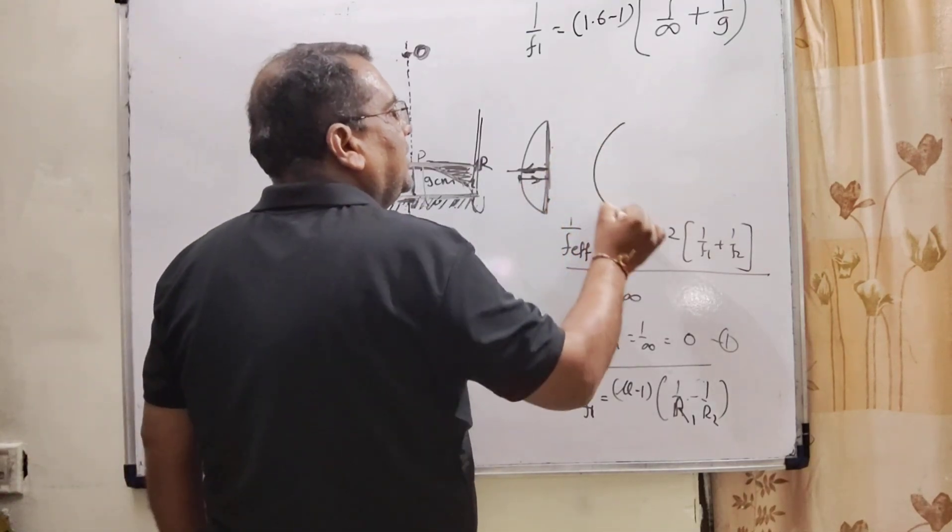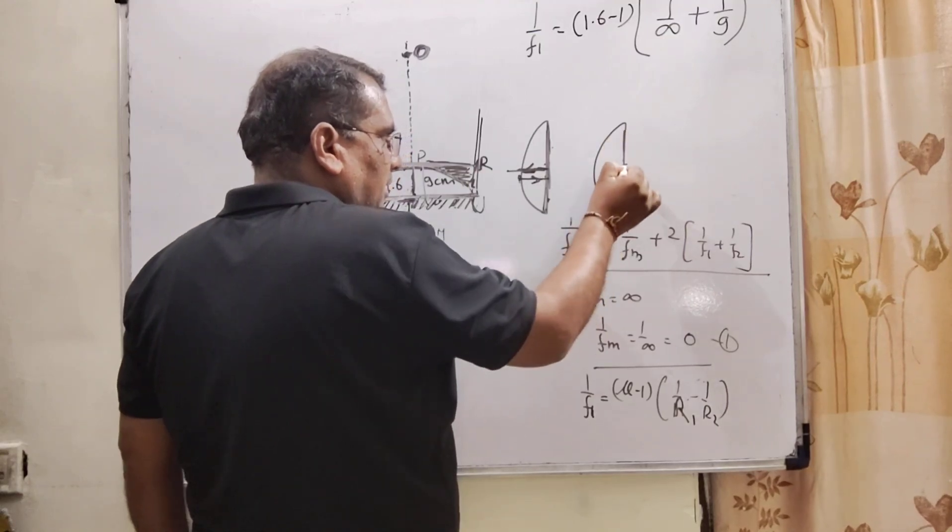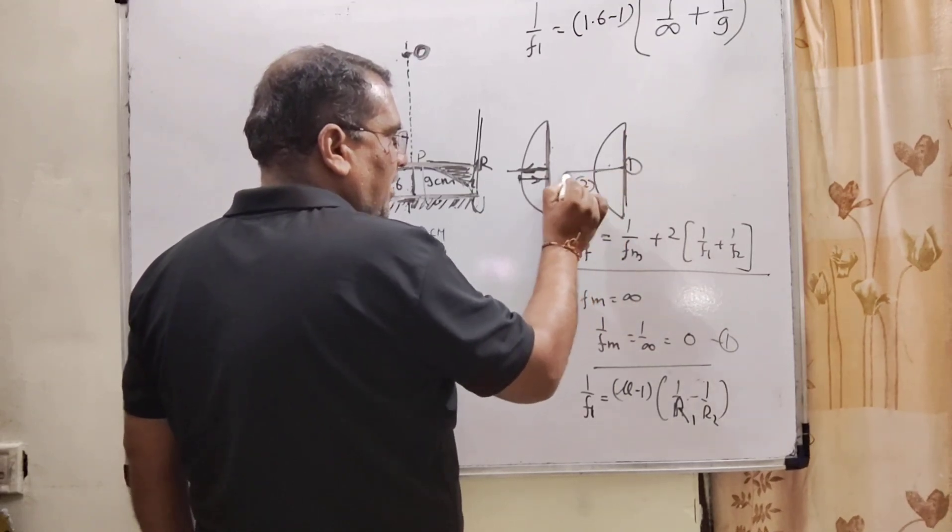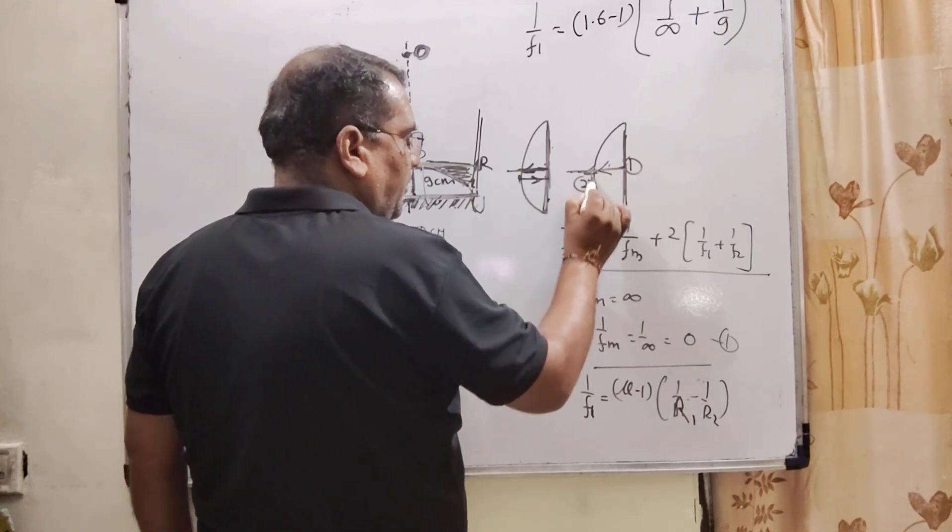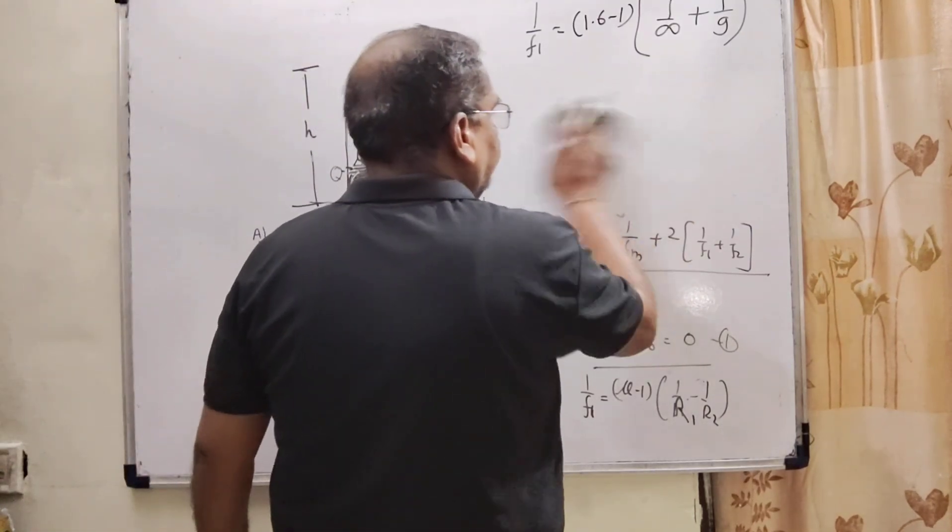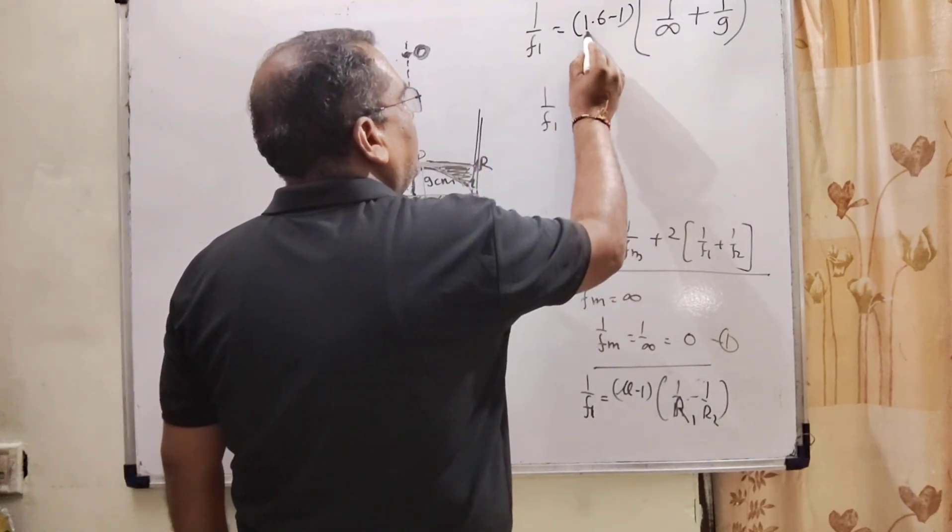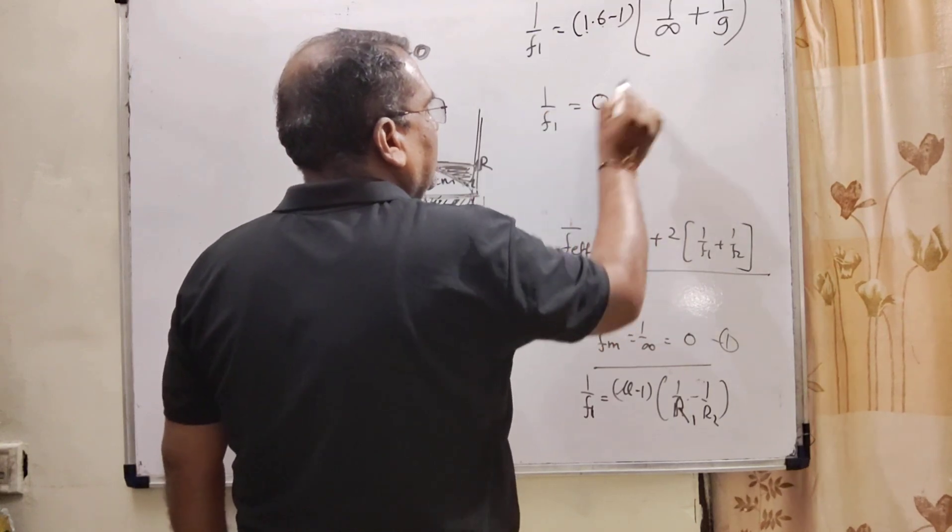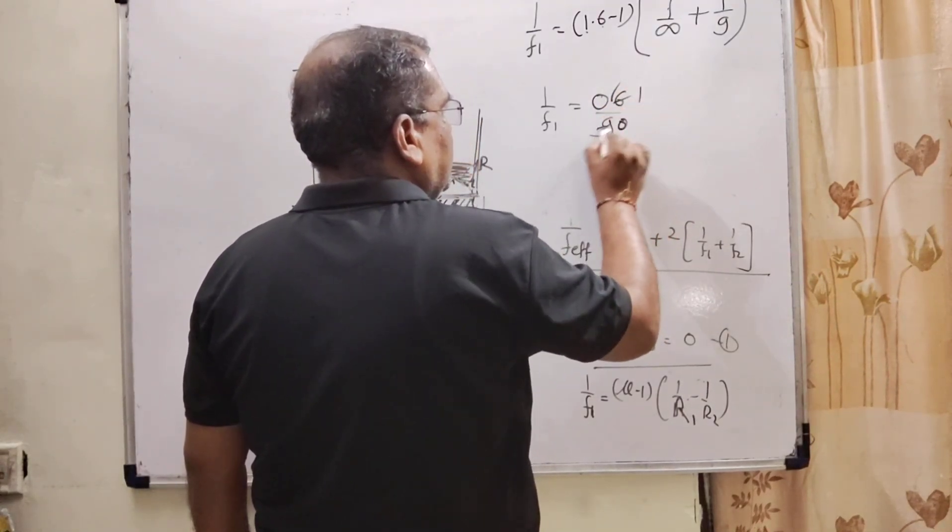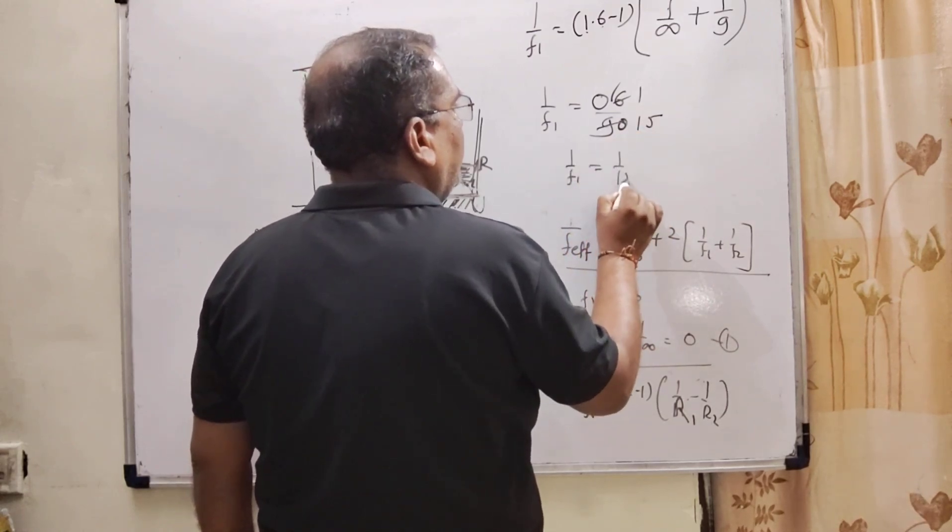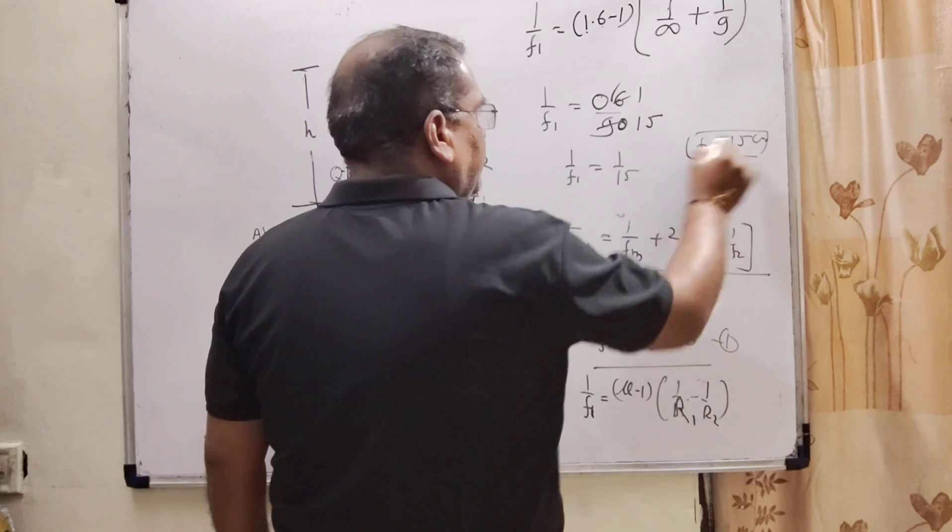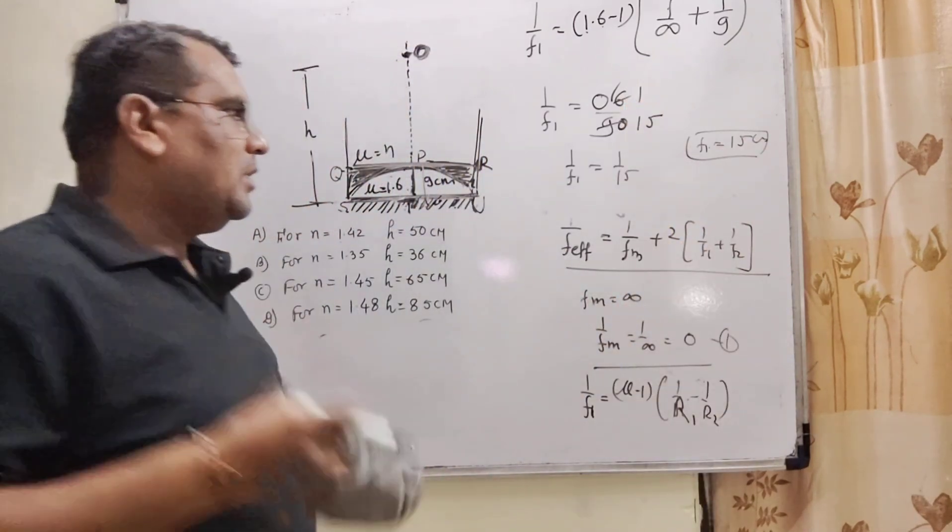In the place of mu we have 1.6 minus 1. Here the first surface, very important sign convention. After reflection the rays reach from this surface to this surface, so this is the first surface. The radius of curvature is infinity. The ray direction is right to left, and distance measured from the pole is left to right, so this is negative. So minus minus plus, which gives 1 by 9. So 1 by f1 equals 0.6 times 1 by 9, which equals 1 by 15.